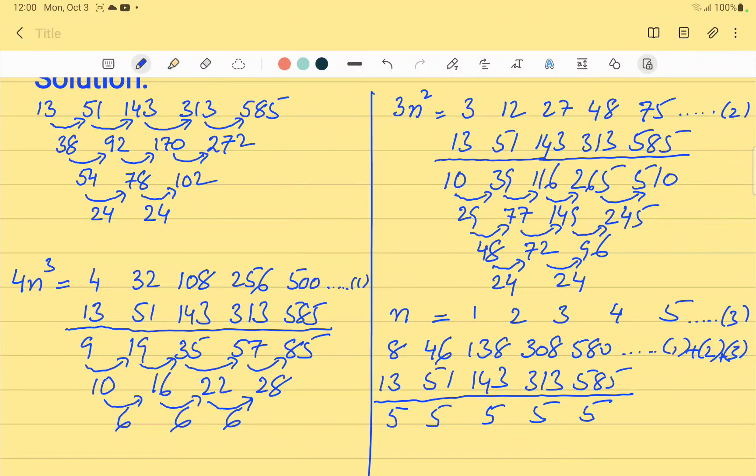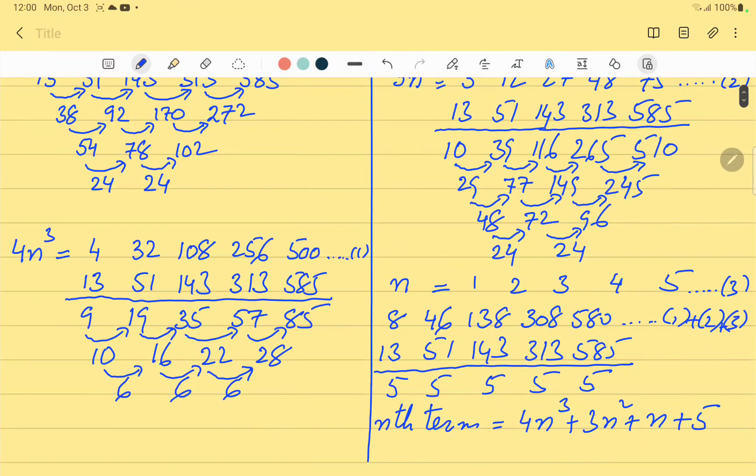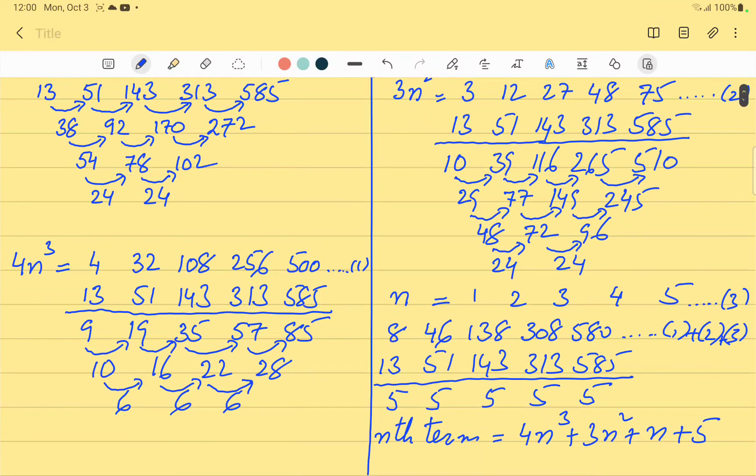Therefore, our nth term in this case will be, so you can say for this question is, 4n³ plus 3n² plus n plus 5. Which is the answer of this question.